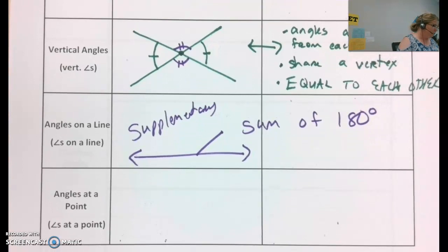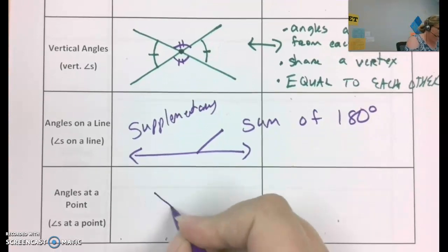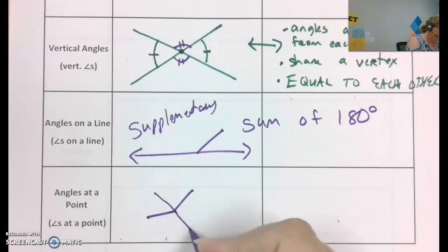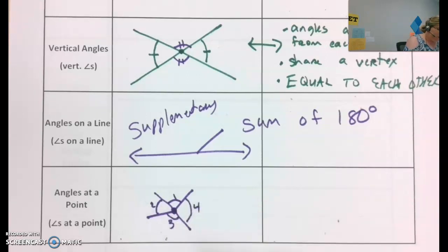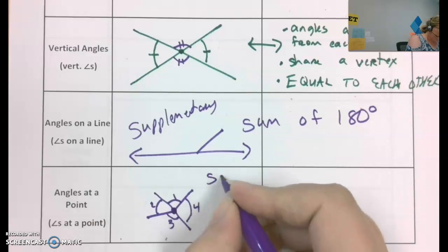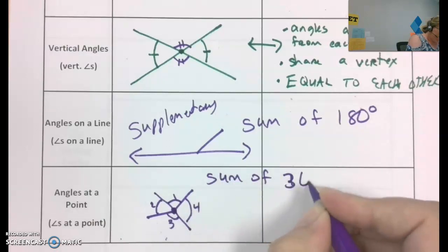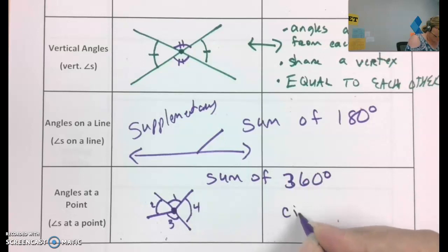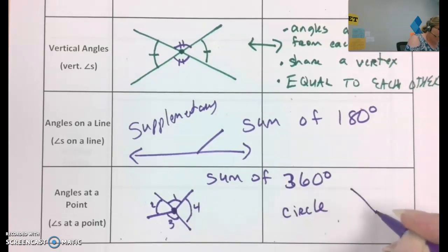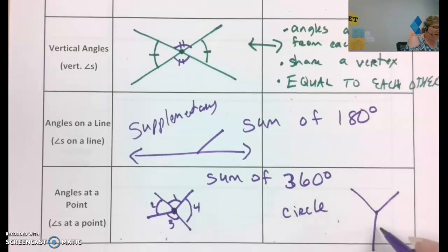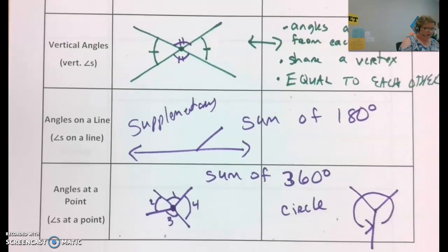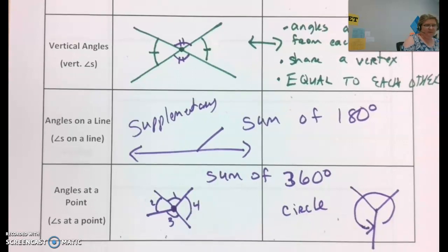We have angles at a point. This one's a little harder to draw. Okay. All of these angles. Angle one, angle two, angle three, and angle four. Those angles have a sum of 360 degrees. It's like a circle. So, three, yeah. I think you need at least three angles to make angles at a point.